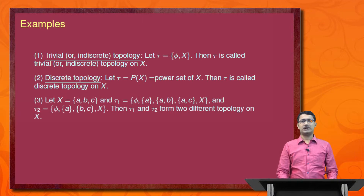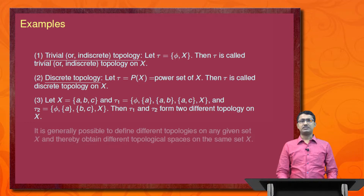Next, consider a set X = {a, b, c} with three elements. Let tau_1 = {phi, {a}, {a,b}, {a,c}, X}. We can easily show that tau_1 is a topology on X. Again, tau_2 is defined as {phi, {a}, {b,c}, X}. Then tau_1 and tau_2 form two different topologies on X. It is generally possible to define different topologies on any given set X, thereby obtaining different topological spaces on the set X.